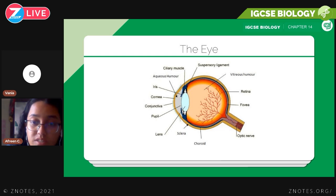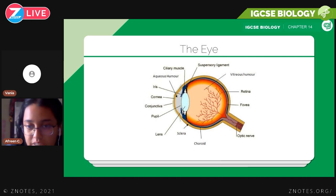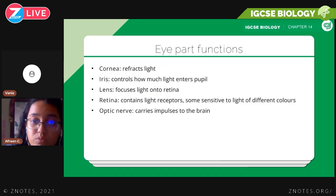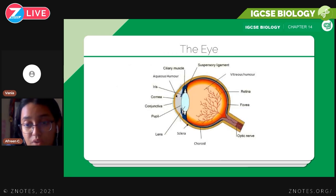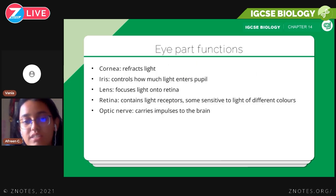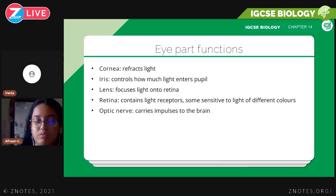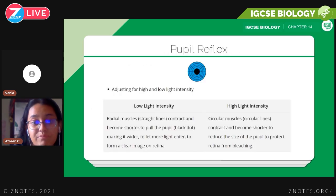You need to know about the suspensory ligaments and the ciliary muscles, though you won't be required to identify them in diagrams. The fovea is where most of the light receptors are concentrated. The optic nerve is the part extending out of the eye that carries impulses to the brain, conveying information about what you're seeing.